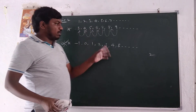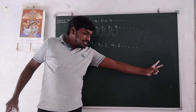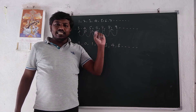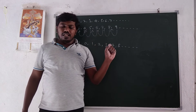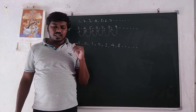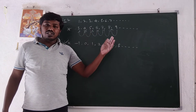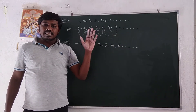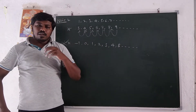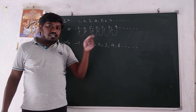From these two observations we conclude: first, if a constant is added to each term of an AP, then the resulting sequence is also in AP. Second, if a constant is subtracted from each term of an AP, then the resulting sequence is also in AP.